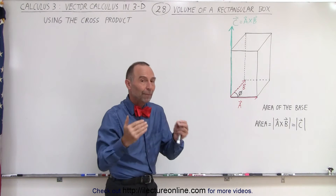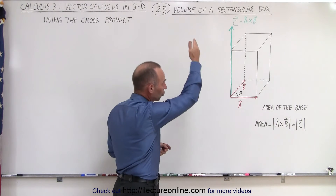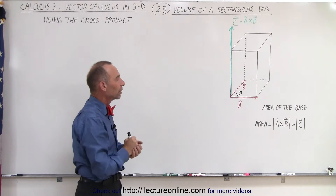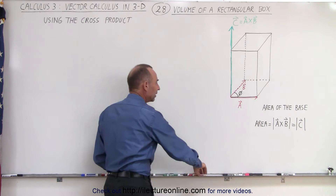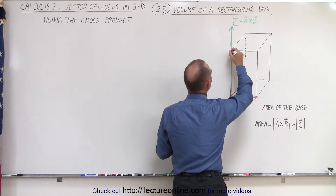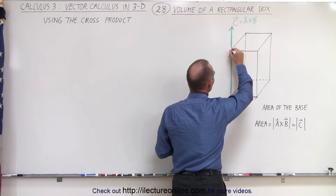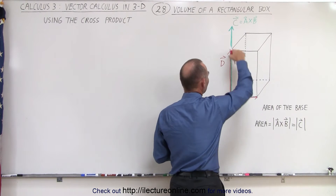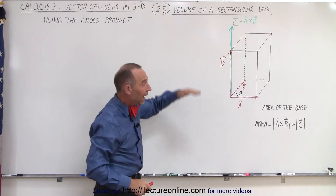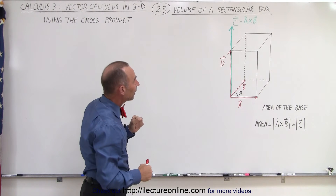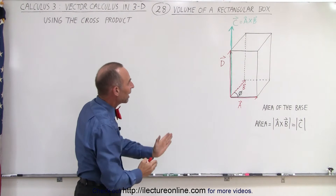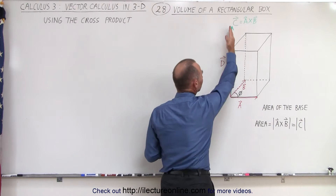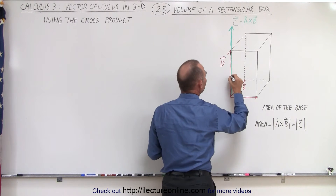The magnitude of C is equal to the magnitude of A cross B. The green vector here represents the magnitude of the cross product of A cross B. Now we're going to define another vector — we have a third side to our cube. Let's call that vector D. That vector has a length equal to the height of the cube, and its direction goes from the base to the very top of the cube. The angle between vector C and vector D, let's call that angle theta.